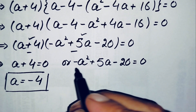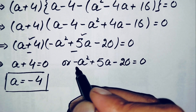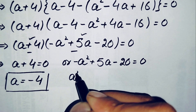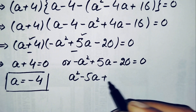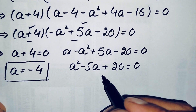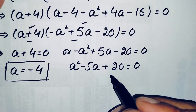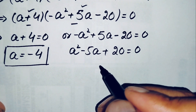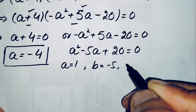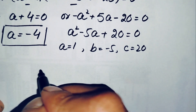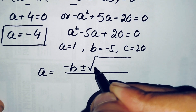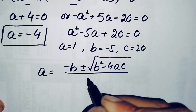Now we will solve the quadratic equation. First we make the coefficient of a squared positive by multiplying the equation by negative 1. This gives us a squared minus 5a plus 20 equals 0. Since this cannot be factored, we will use the quadratic formula. The values are: a equals 1, b equals negative 5, and c equals positive 20. The quadratic formula is x equals negative b plus or minus square root of b squared minus 4ac, divided by 2a.